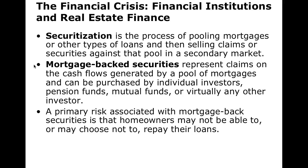Let's talk about the financial crisis and the role of financial institutions in real estate finance. Securitization is the pooling of mortgages and creating a new, bigger investment. They take all these individual mortgages and package them together, then sell them in the secondary market as a safer investment. If you're investing in 5,000 mortgages, you're diversified among 5,000 different people. This is called a mortgage-backed security. You buy into that package of mortgages and get cash flow generated by the interest on those mortgages. Many individual investors, pension funds, and mutual funds purchased these because they were supposed to be very safe.